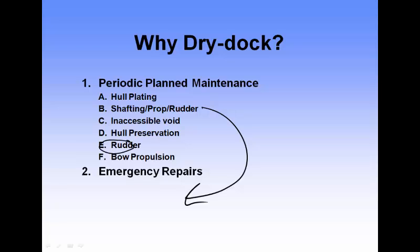Pulling rudders, bow propulsion systems like bow props or thrusters — these are all underwater so it's much easier to do maintenance while the vessel is high and dry. In an emergency you can do it underwater, but it's way more expensive. Any type of emergency repairs that compromise any of these items are also grounds for a dry dock — we call it an emergency dry dock versus a routine dry dock, which is what the planned maintenance piece is.